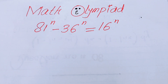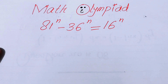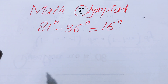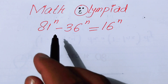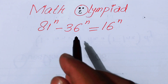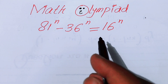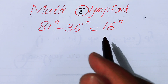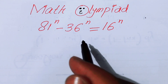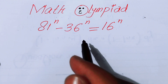Hello everyone, welcome back to the Map of Mathematics. In this video we are going to solve this nice algebra problem: 81 to the power of n minus 36 to the power of n is equal to 16 to the power of n. We will solve this problem for the real values of n.